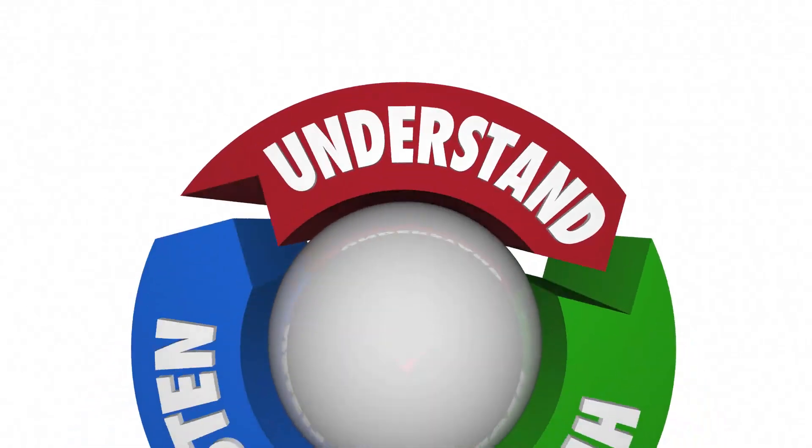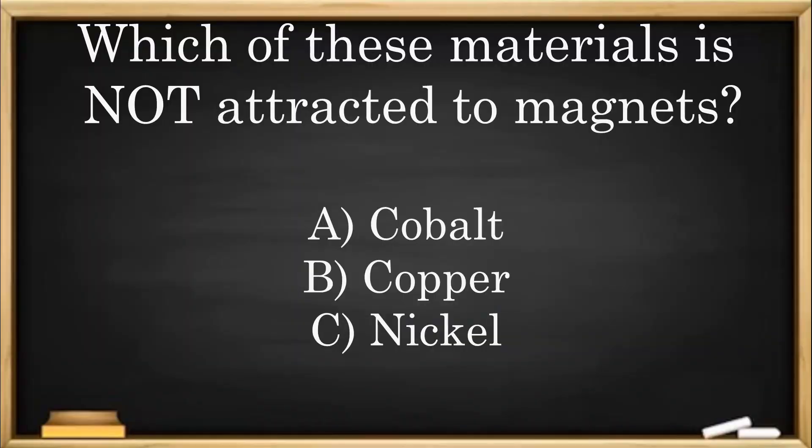Final check for understanding. Which of these materials is not attracted to magnets? A. Cobalt. B. Copper. C. Nickel.